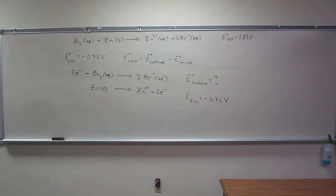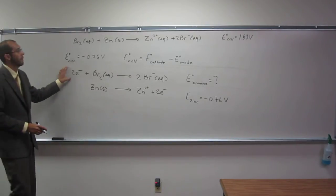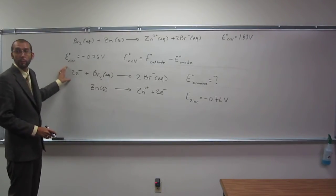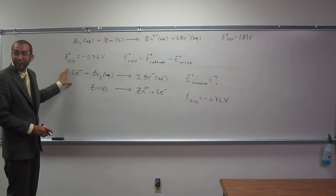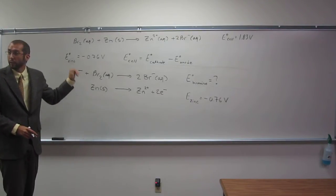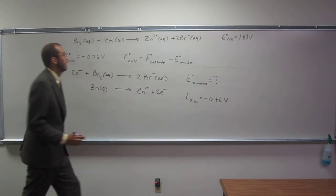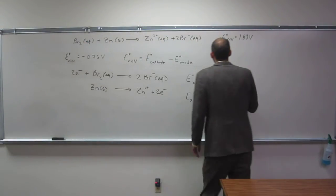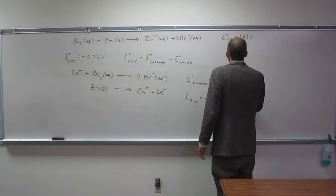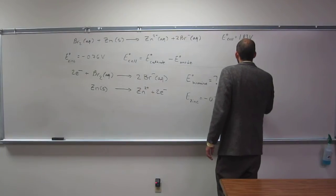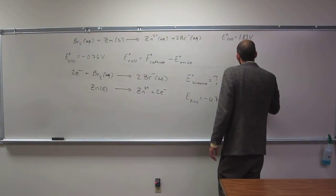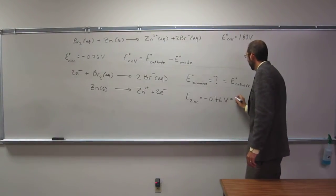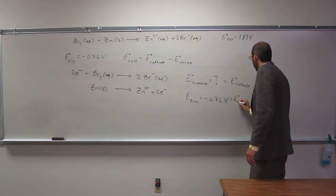So with bromine being reduced, that's going to be the potential of the cathode. The thing at the cathode is the thing that gets reduced. So we could say this is going to be equivalent to the standard potential of the cathode. So that must mean this is the standard potential of the anode.